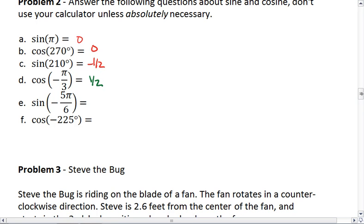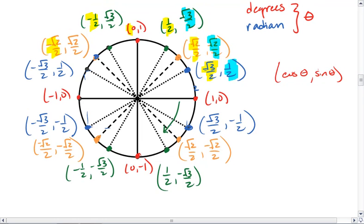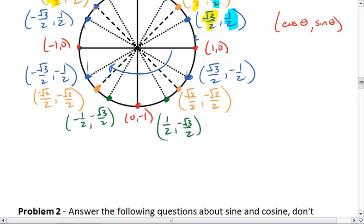Sine of negative pi 6. Okay. Well, if we were to normally go to pi 6, we would go around to this blue dot here. But since it's negative, we're going to go clockwise. So we're going to go to this blue dot on the bottom left. The sine value there is the x value. That's negative 1 half.